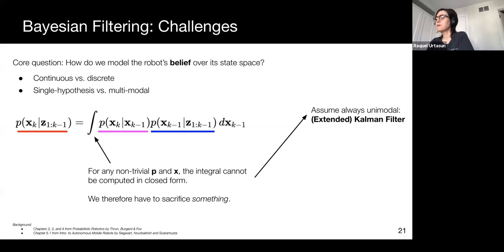We can also approximate the integral via Monte Carlo sampling. This is known as particle filter or importance sampling.